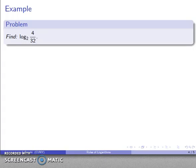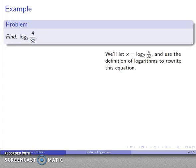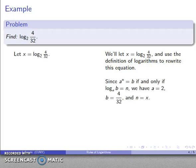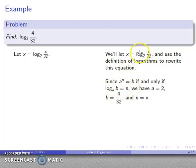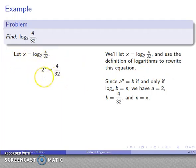How about a different one: log to base 2 of 4 over 32? I'll let x be log to base 2 of 4 over 32 and use my definition of logs to rewrite the equation. My definition: a to power n equals b gives me log to base a of b equals n. So a, my base, is 2; b, my argument, is 4 over 32; and n, the value of the log, is x. So I can write 2 to power x equals 4 over 32.